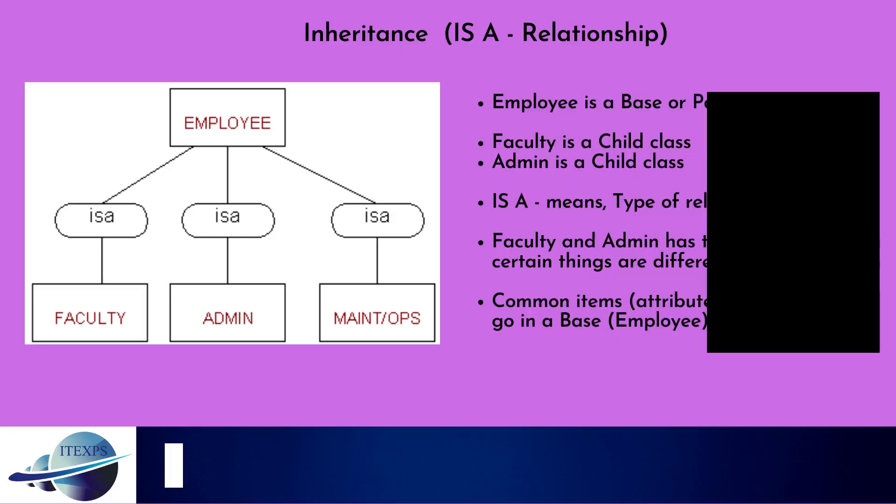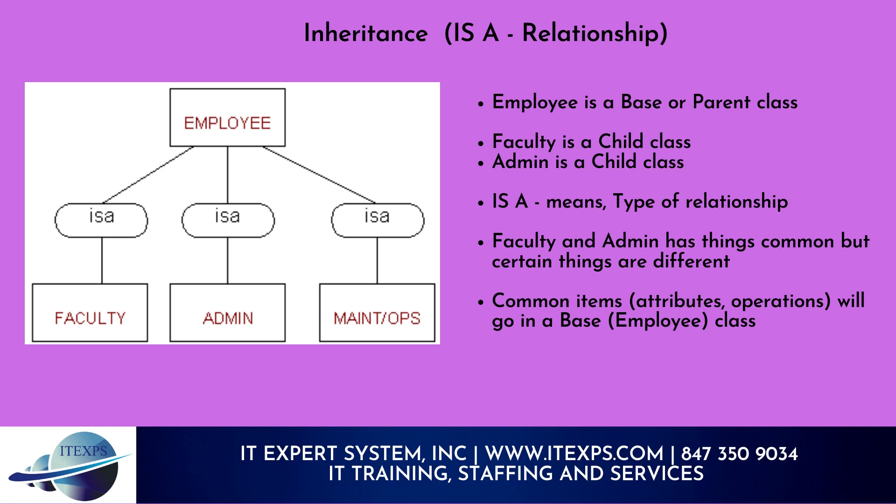Inheritance represents an 'is-a' relationship. For example: Employee is a base or parent class. Faculty is a child class, and Admin is a child class — meaning Faculty and Admin are types of Employee. Faculty and Admin share many common things but certain things are different. Common attributes and operations go in the base Employee class.